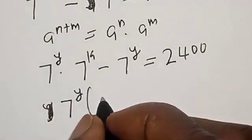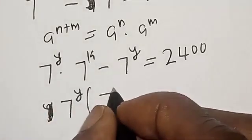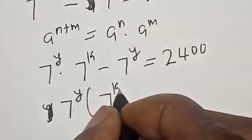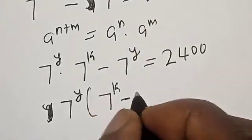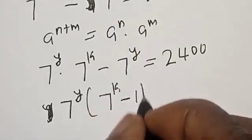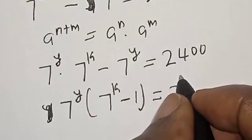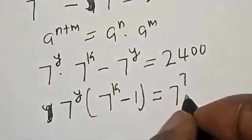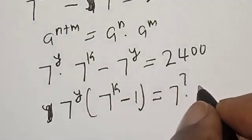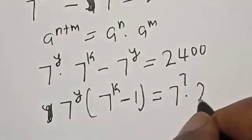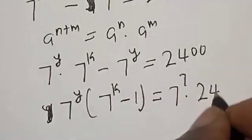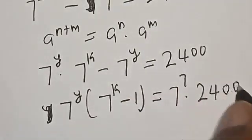Now, we have 7 raised to the power y plus k, minus 7 raised to the power y, is equal to 7 raised to the power 7 multiplied by 2400.